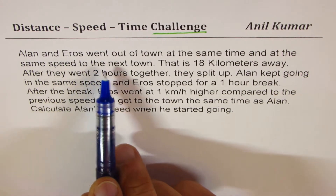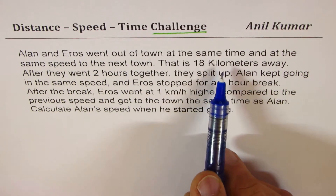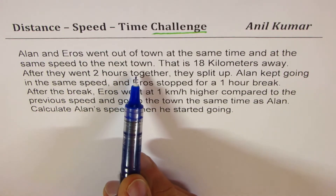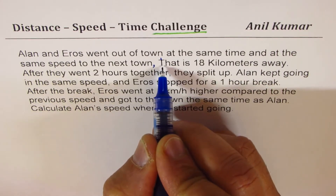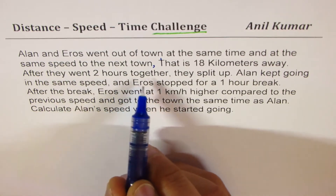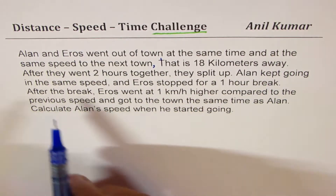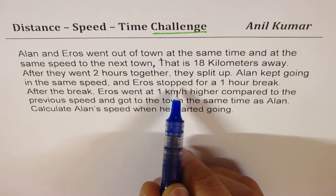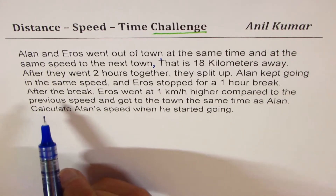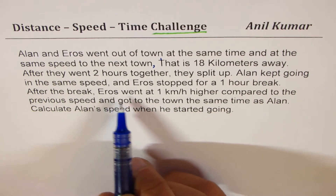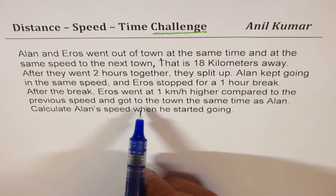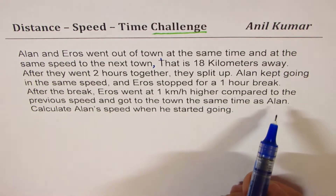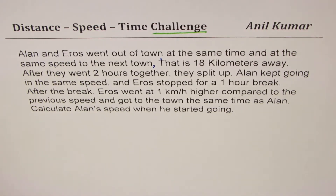The question is: Ellen and Eros went out of town at the same time and at the same speed to the next town that is 18 kilometers away. After they went two hours together, they split up. Ellen kept going at the same speed, and Eros stopped for a one-hour break. After the break, Eros went at one kilometer per hour higher compared to the previous speed and got to the town the same time as Ellen. Calculate Ellen's speed when he started.